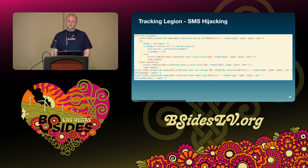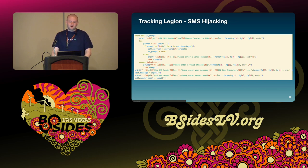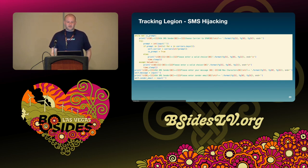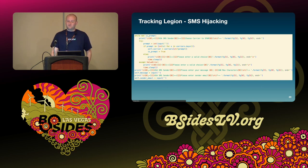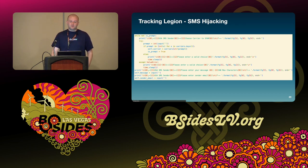Legion uses an interesting method of generating alternative numbers to target via scraping area codes and carrier keys from the website randomphonenumbers.com. To conduct the scraping, Legion uses a Python scraping mechanism via the BeautifulSoup HTML parsing library. This retrieves carrier keys and area codes to which a series of digits are added to make a valid mobile number. Due to the significantly lower entropy associated with mobile numbers, this is much more likely to result in valid targets compared to the AWS key brute forcing.